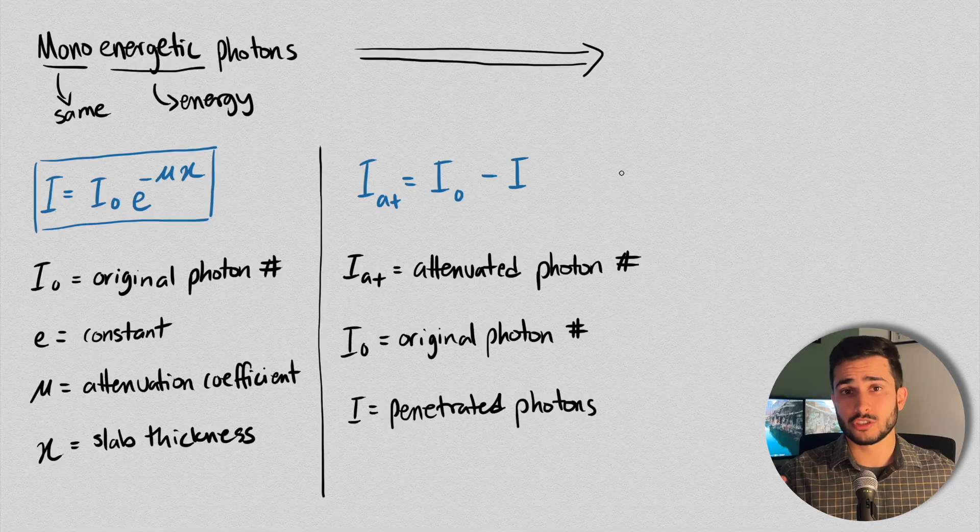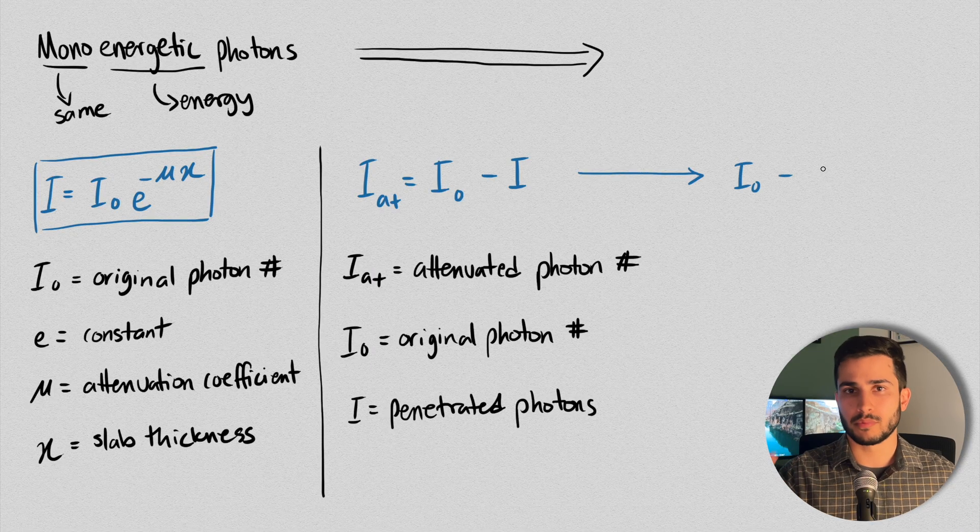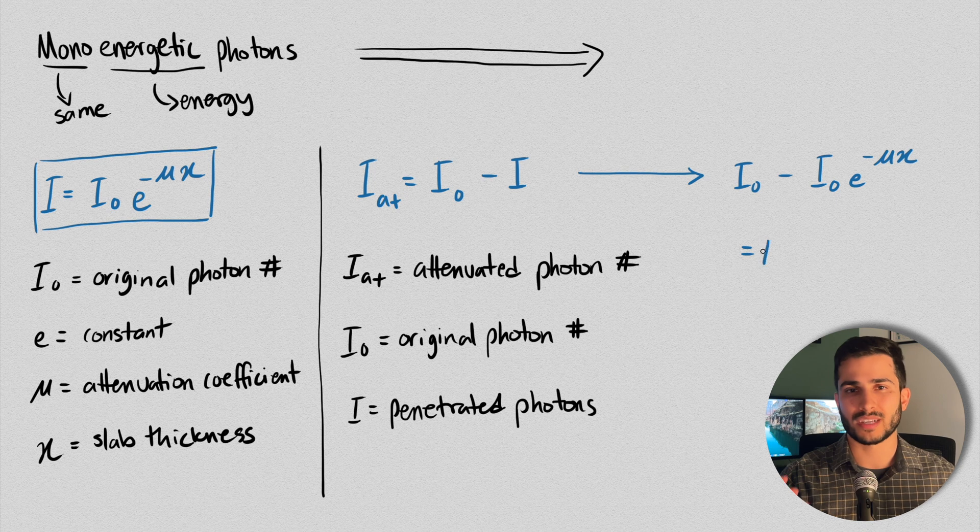So basically, think of it as the number of photons you started with minus the number of photons that went through leaves you with the number of photons that didn't make it through, i.e. the photons that were attenuated. And you just replace I in the formula from before, and do some math to extract the common values from each, and you end up with this.